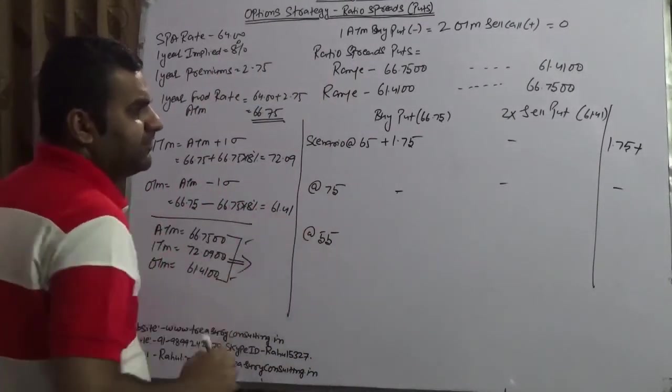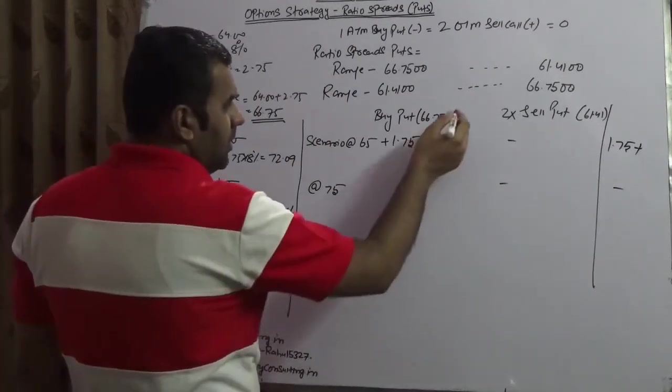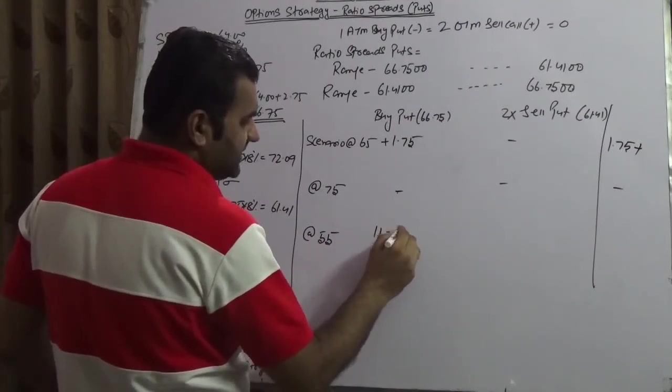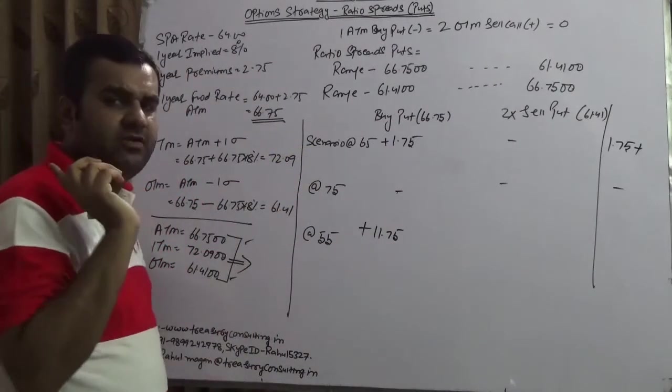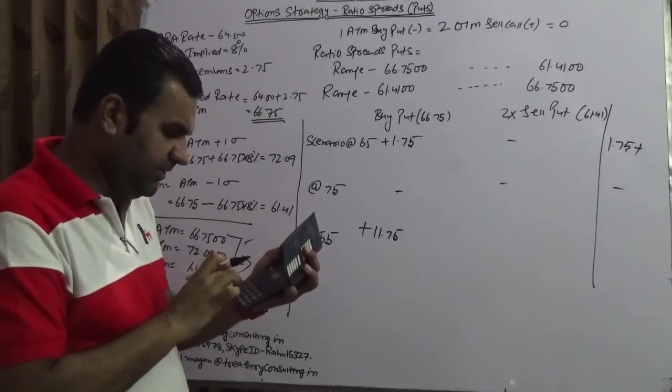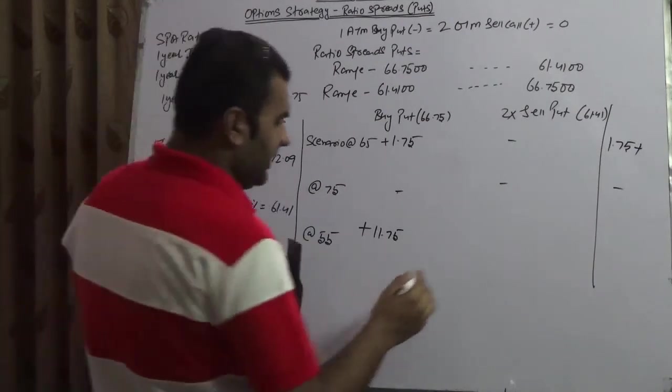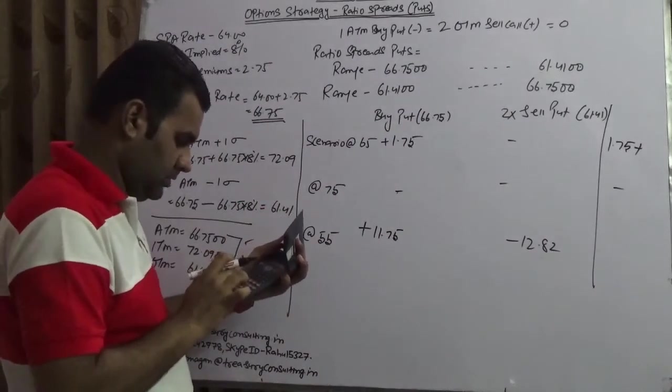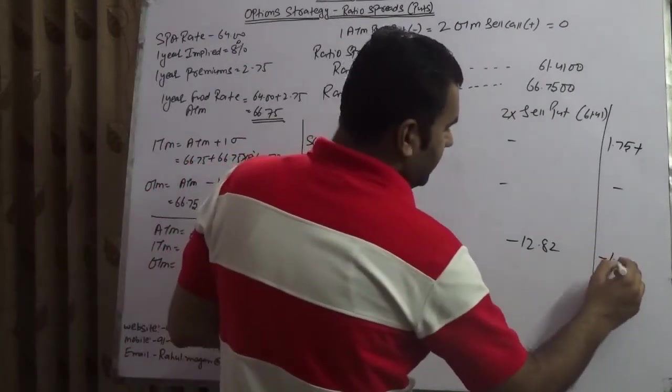Third, 55. He has a right to sell at 66.75. Market is at 55. So it is 11 rupee 75 paisa plus. It's a gain. On the other side, somebody has a right to sell at 61.41 and the market is at 55. 61.41 minus 55 into 2 which is minus 12.82. Minus 12.82 plus 11.75 which is minus 1.07.